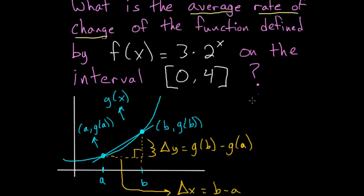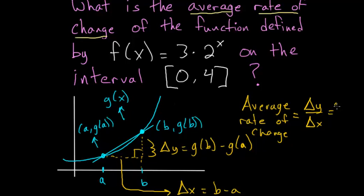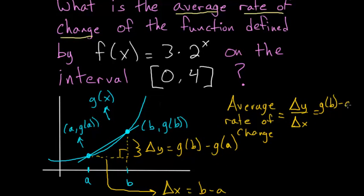So we can say that in general, the average rate of change is equal to the change in y over the change in x from this secant line here, which we know is just g(b) minus g(a) over b minus a.